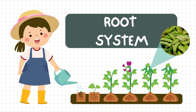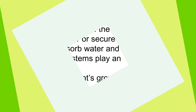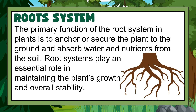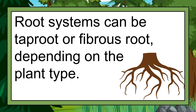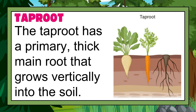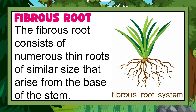The Root System. The primary function of the root system in plants is to anchor or secure the plant to the ground and absorb water and nutrients from the soil. Root systems play an essential role in maintaining the plant's growth and overall stability. Root systems can be taproot or fibrous root, depending on the plant type. The taproot has a primary, thick main root that grows vertically into the soil, like carrots and radish. The fibrous root consists of numerous thin roots of similar size that arise from the base of the stem, like onions, sweet potatoes, and rosemary.